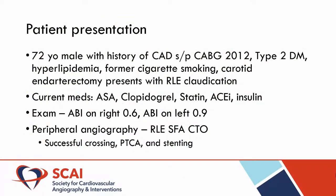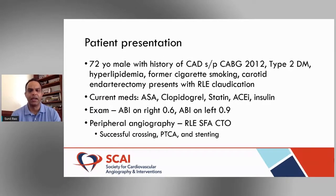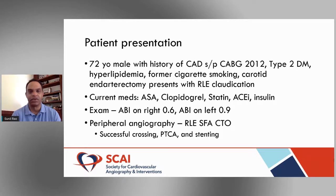I'll start with a case presentation because it's important to put clinical trial results into clinical context. This is a patient we cared for a few months ago — a 72-year-old male with a history of coronary artery disease, bypass surgery in 2012, type 2 diabetes, hyperlipidemia, former smoking, and carotid endarterectomy. He now presents with lower extremity claudication.